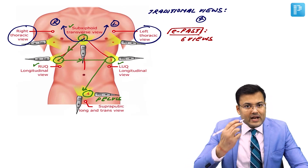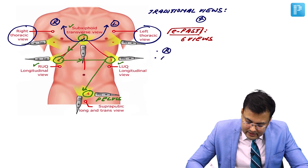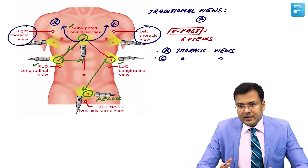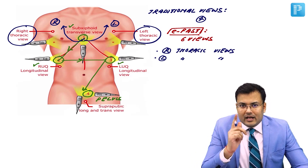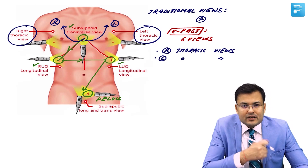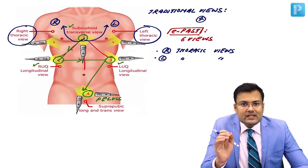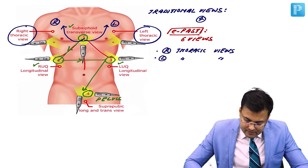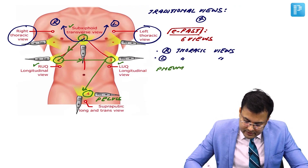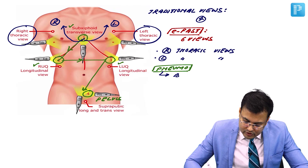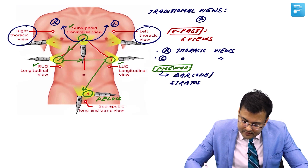The two additional views in E-FAST are the right and left thoracic views. If a patient has pneumothorax and E-FAST is performed, a specific sign is seen called the barcode sign, also known as the stratosphere sign.